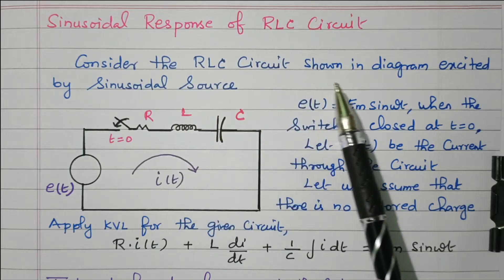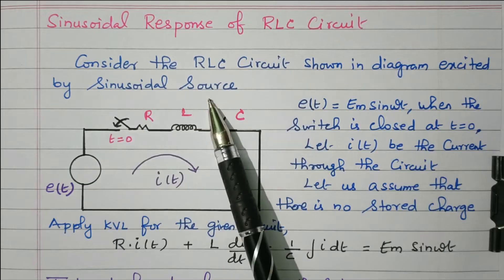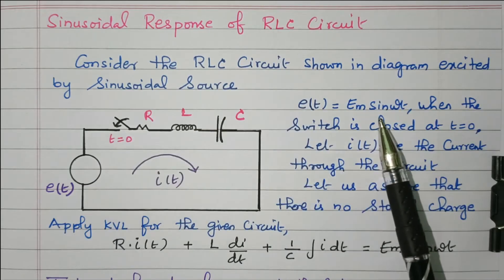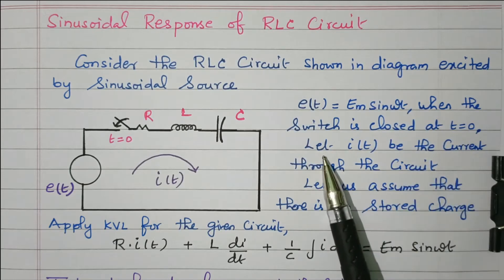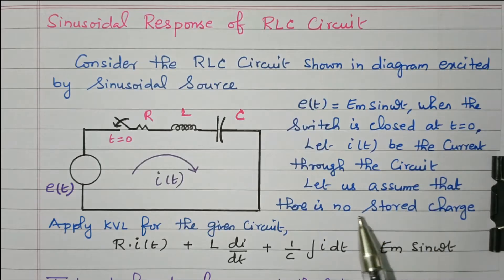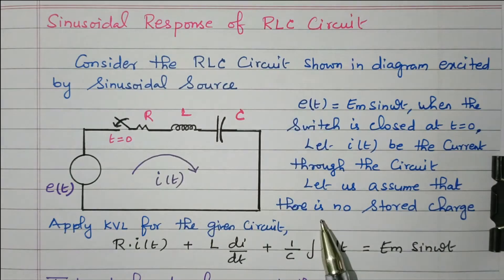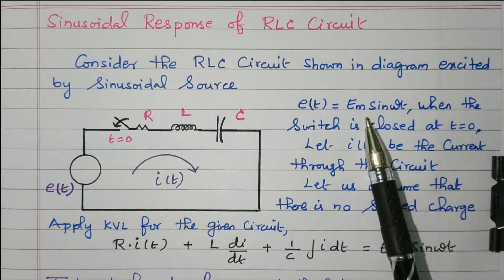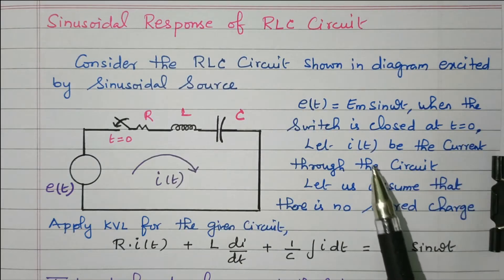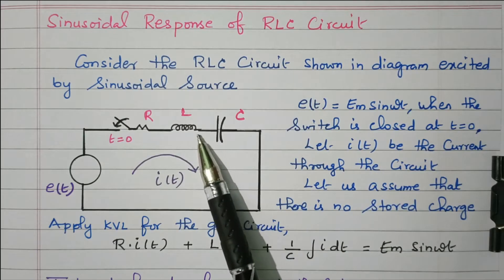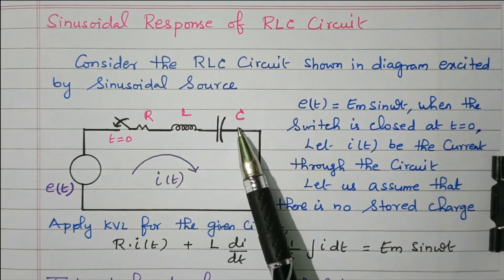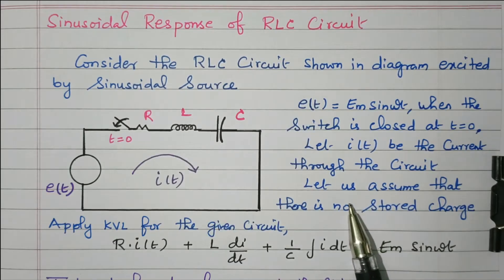Consider the RLC circuit shown in the diagram, excited by the sinusoidal source E(T) = Em sin(ωT), when the switch is closed at T equal to 0. Let I(T) be the current through the circuit. Let us assume that there is no stored charge before closing the switch. There are two storage elements — inductor and capacitor — and there is no charge in the circuit before closing the switch.